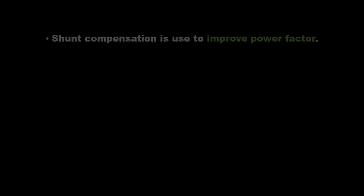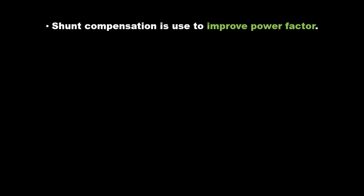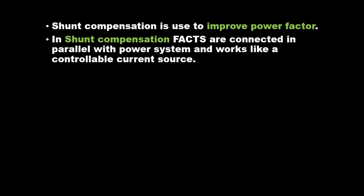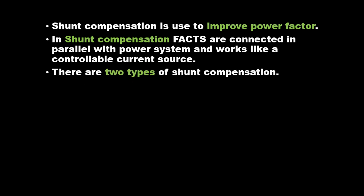The objectives of shunt compensation: shunt compensation is used to improve power factor. In shunt compensation, FACTS devices are connected in parallel with the power system and work like a controllable current source. There are two types of shunt compensation.